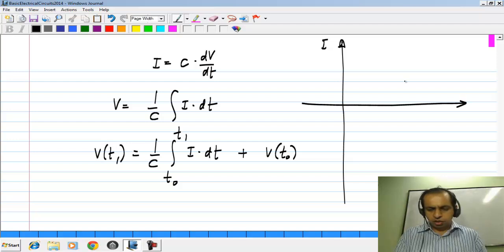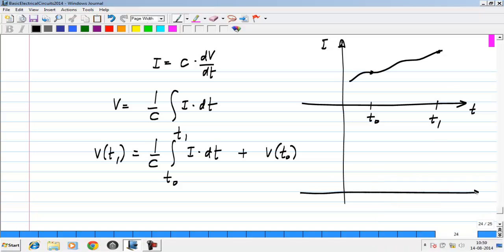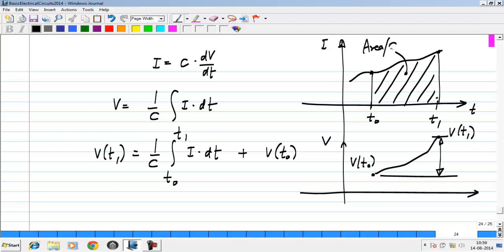Let's say the current follows some waveform like this, and this is T0 and this is T1. If you plot the voltage it has some value at T equals T0, and it will increase in some way and at T1 it will be V of T1. And this increase V of T1 minus V of T0 is given by the area under this curve, area under the current curve divided by C. That is what this is saying.